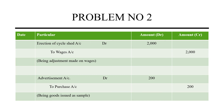The next one is: goods issued as samples Rs. 200. In this case, we have taken goods from our own company for free samples. The goods have been purchased from our own stock. Debit what comes in — the goods have been taken, so we mention it as a purchase account — and credit what goes out from the company.